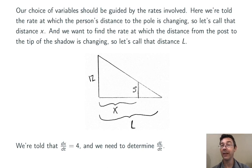Let's explicitly state the derivatives that we're given and that we need here. We're told that dx/dt is 4, the rate at which the person is moving, and we need to find dL/dt, the rate at which the tip of the shadow is moving.